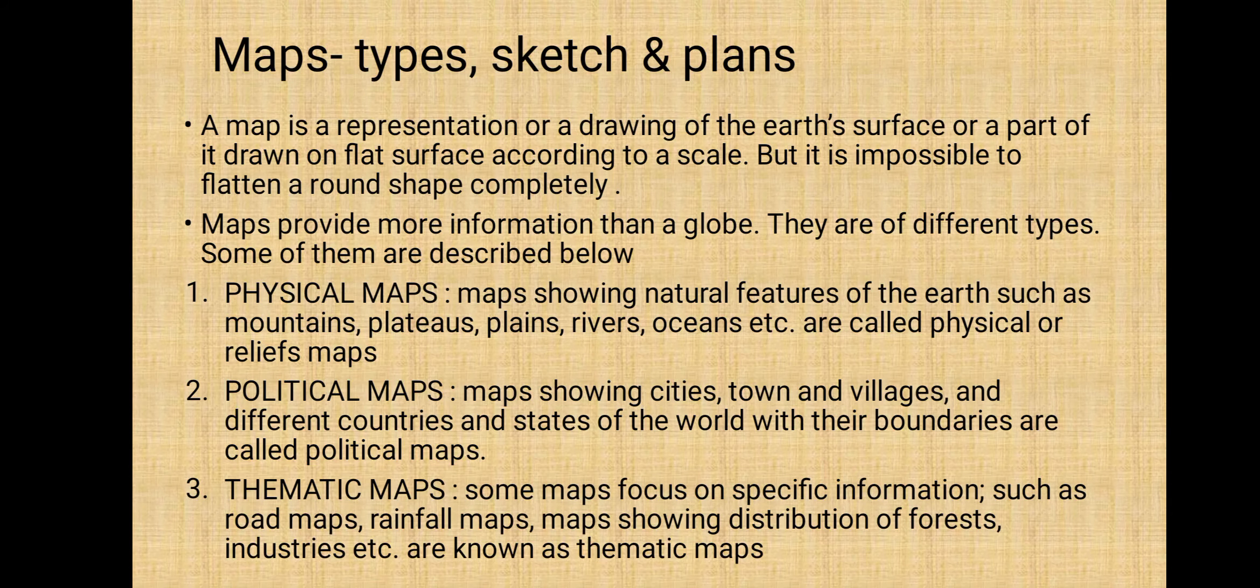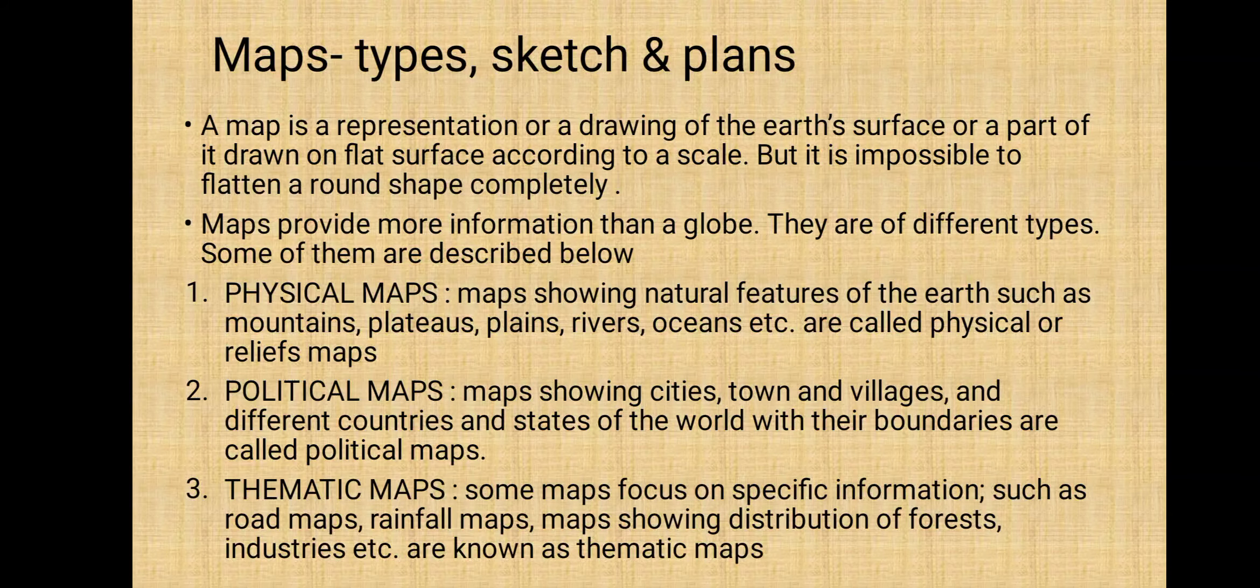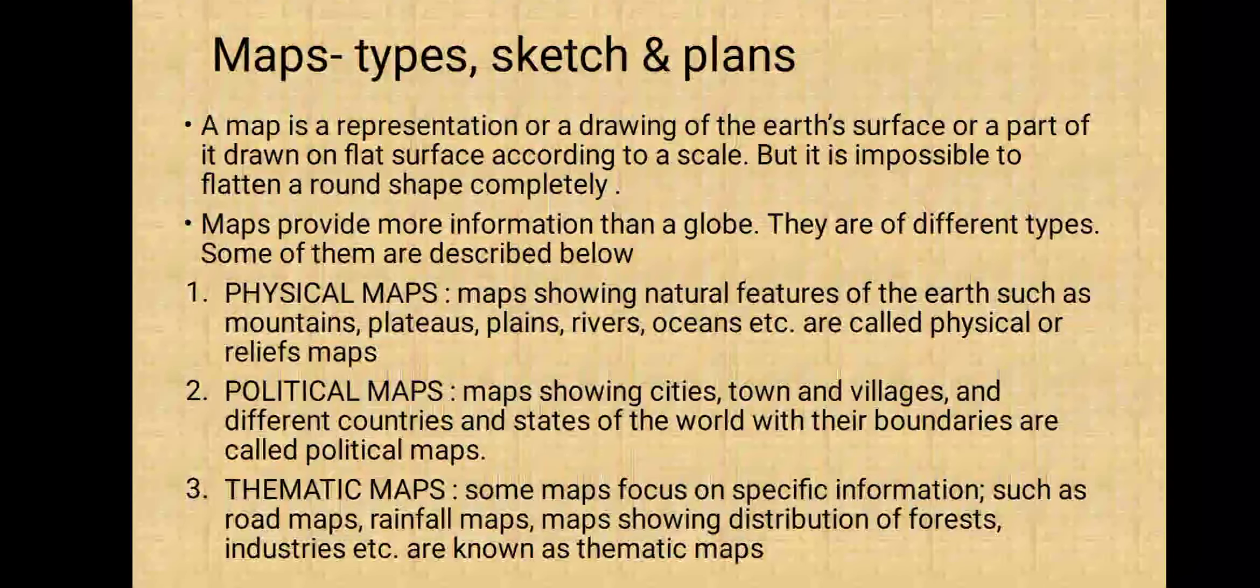Now we will see what a map is. A map is a representation or drawing of the earth's surface, or a part of it, drawn on a flat surface according to a scale. But it is impossible to flatten a round shape completely. Still, it is a drawing on a flat surface.